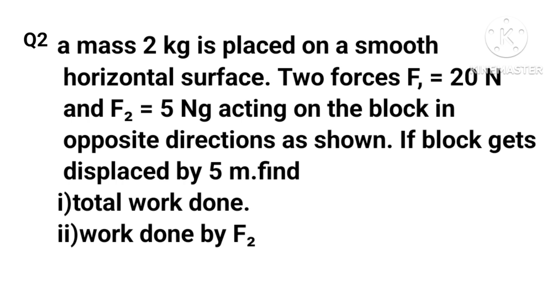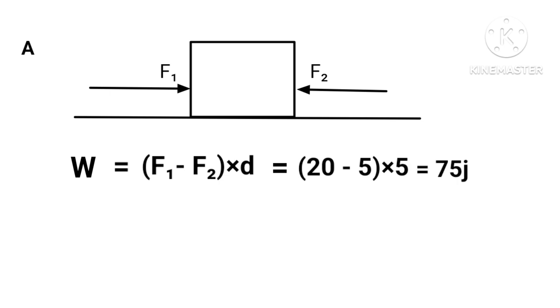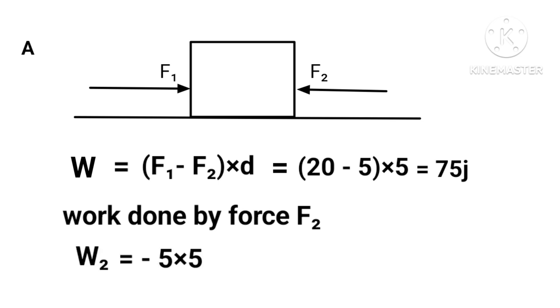Effective work done: W = (F₁ - F₂) × d = (20 - 5) × 5 = 75 J. Work done by force F₂ is given by W = -5 × 5 = -25 J.